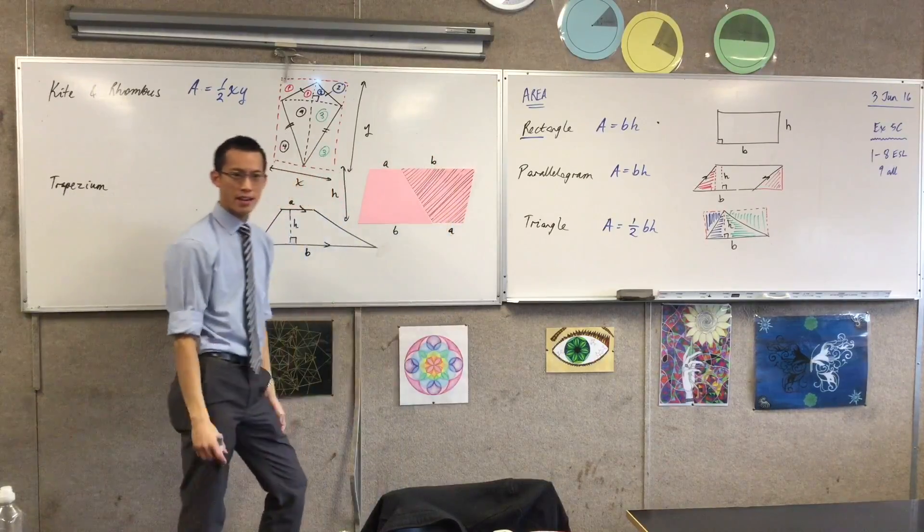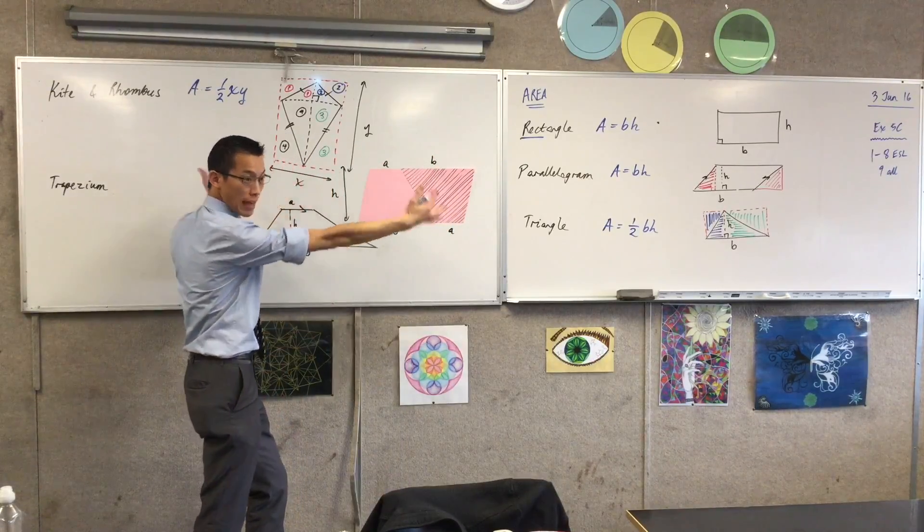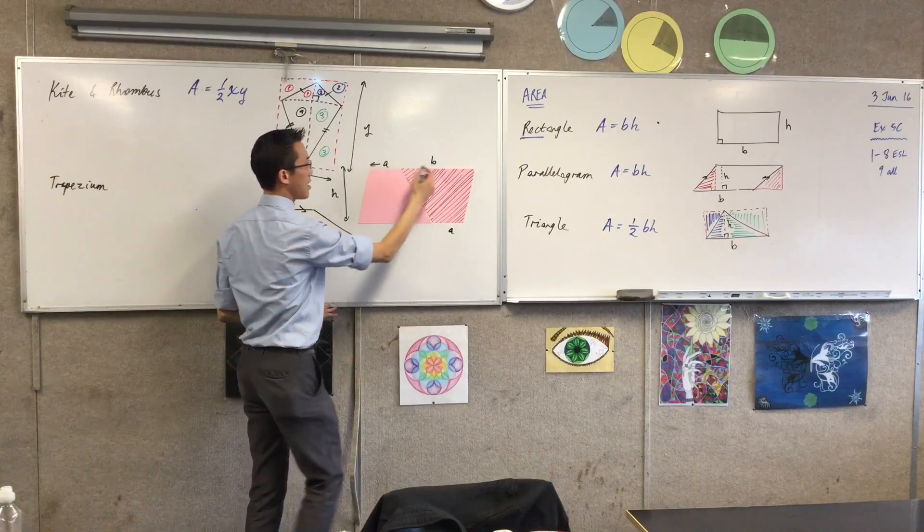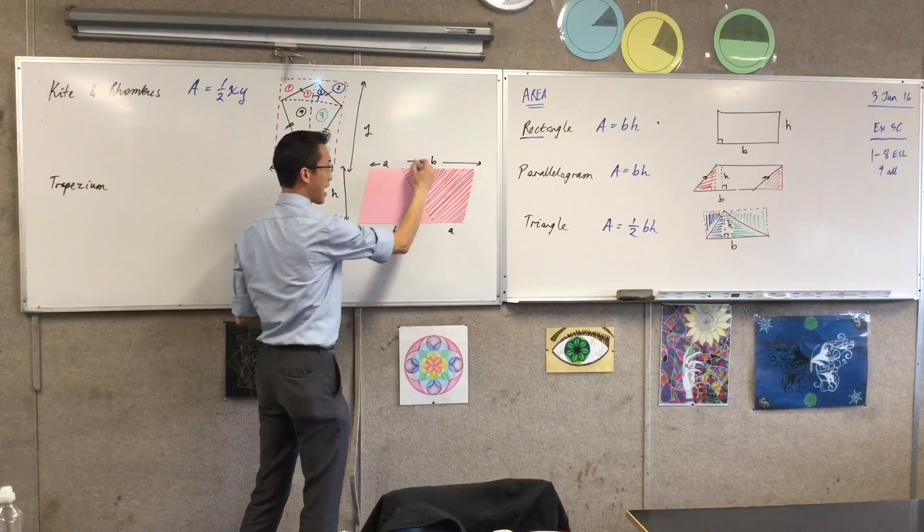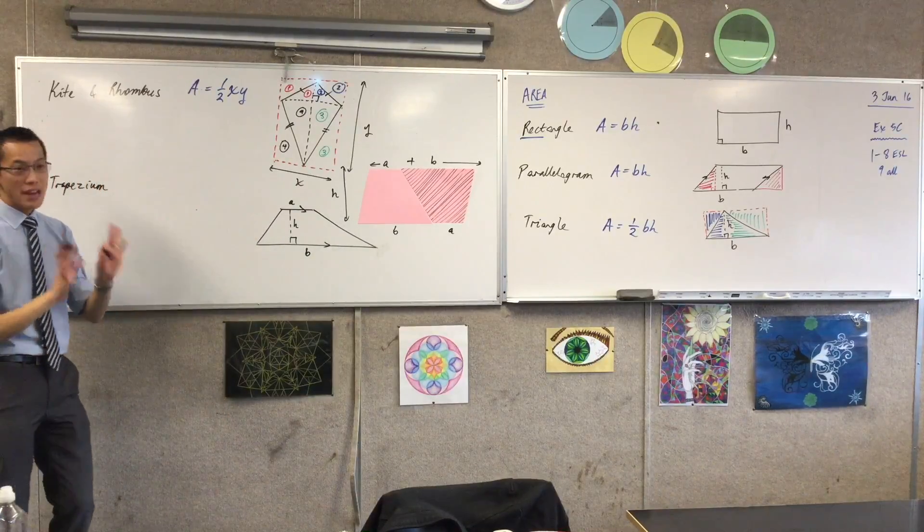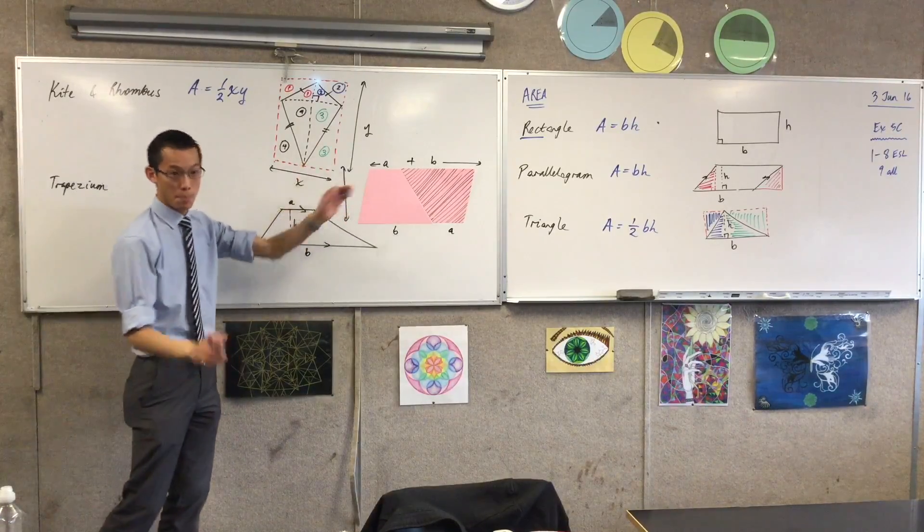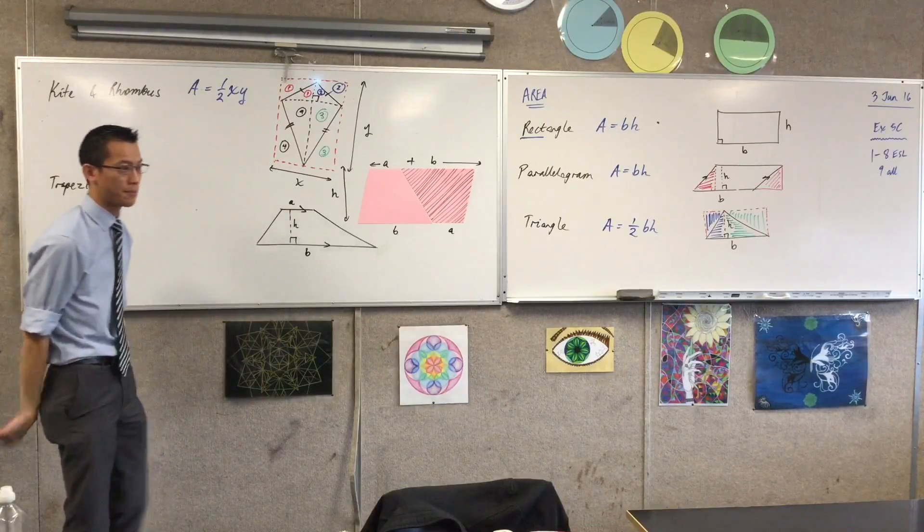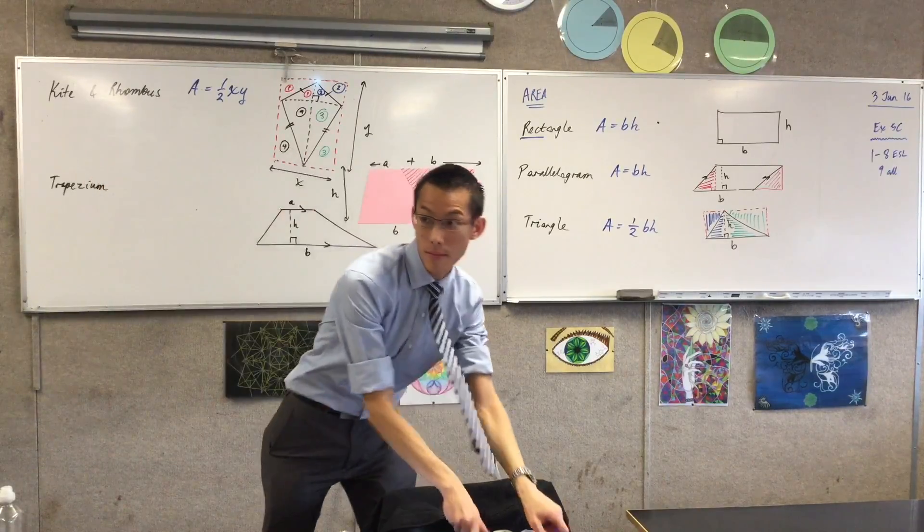So if I want the whole length from here all the way to here, it's a and b together. Do you agree? Okay, so now tell me what's the area of the parallelogram, just the parallelogram. Very good. It's, here's my area, right?